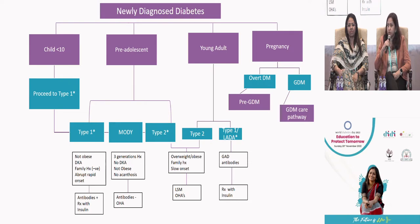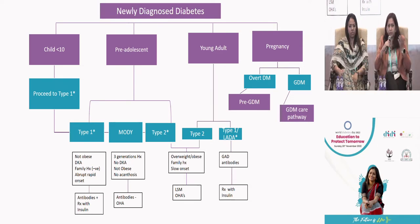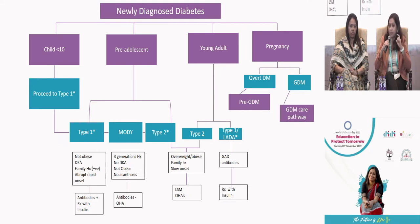All ladies must be tested for diabetes in the first trimester — less than 12 weeks. The diagnostic tests are the same as for non-pregnant adults: HbA1c, fasting plasma glucose, or a 75-gram OGTT with values at 0 and 2 hours. If HbA1c is ≥6.5%, fasting plasma glucose ≥126, or random glucose >200 with symptoms, or OGTT meets standard diabetes criteria, the lady is labeled as having pre-existing diabetes.